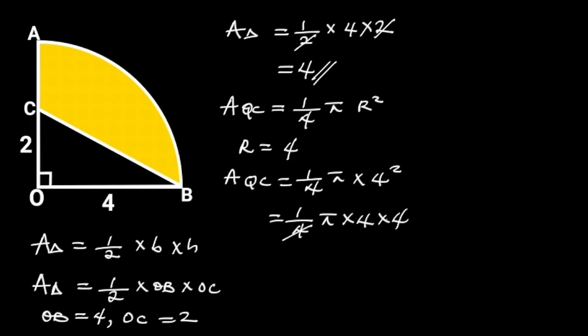4 will cancel out 4. And we are left with pi times 4, which is equal to 4 pi.